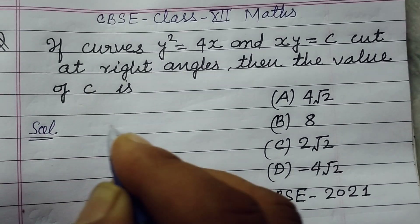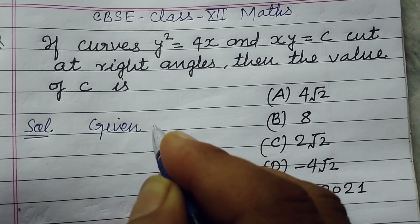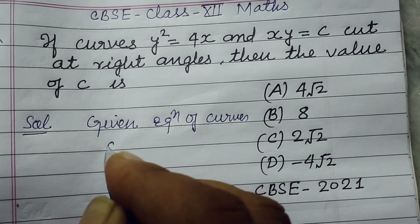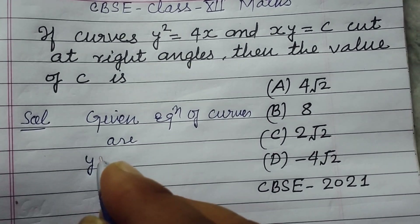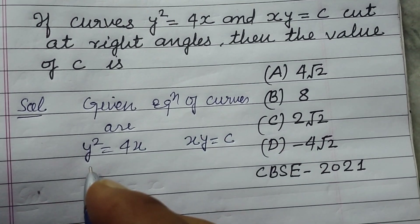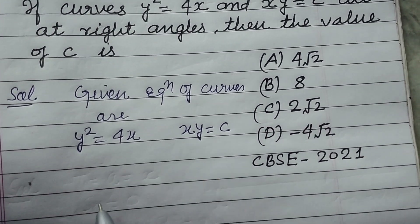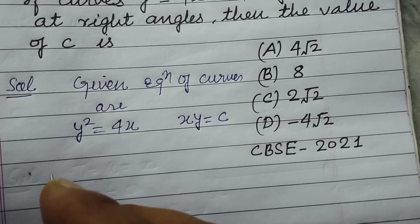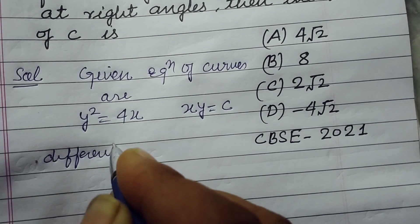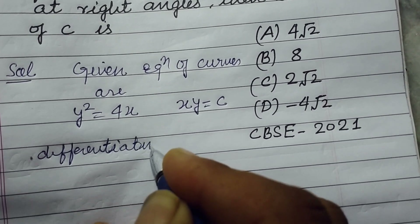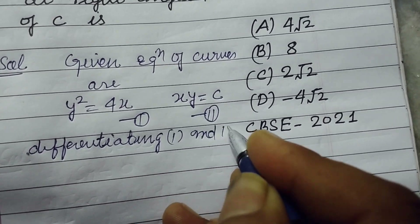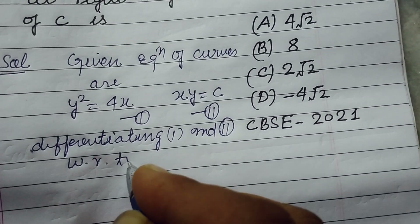So students, the given equations of the curves are y² = 4x and xy = c. Now differentiating these two curves with respect to x to find the gradient. So differentiating the first and second with respect to x.